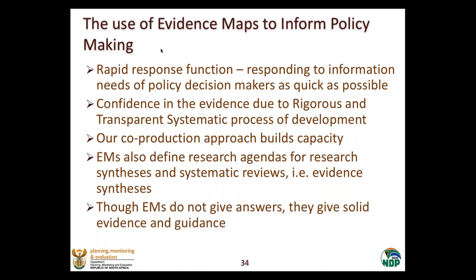What is great about the rigorous and transparent systematic process of developing these maps is that it gives us complete confidence in what is contained in these evidence bases. We can motivate why certain evidence pieces were included and why others were excluded. We can also use and present information contained there with confidence — a really big benefit for us. Another point is that we always try to follow a co-production model, which builds capacity. As we learn from experts outside of government, like ACE and Lawrence in the team, we also define research agendas and needs for further evidence synthesis, and we get to see where the gaps are and where further research needs to be done.